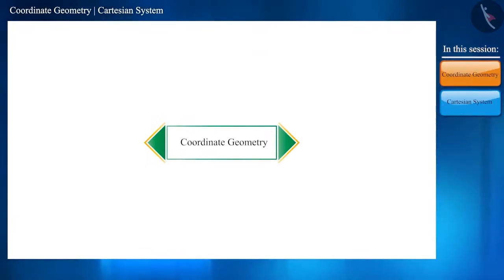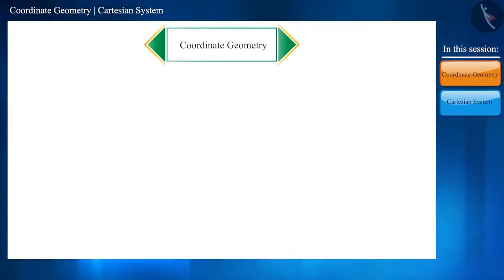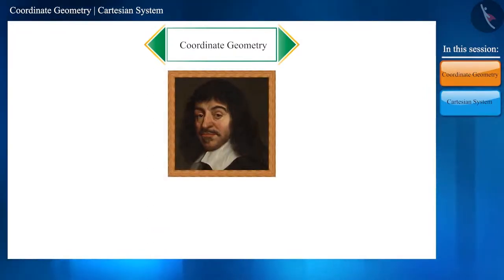The origin of coordinate geometry was done by the great French mathematician René Descartes. That is why it is also called the Cartesian system.